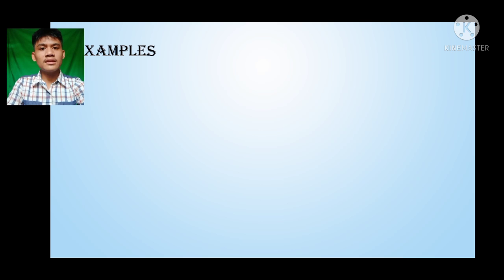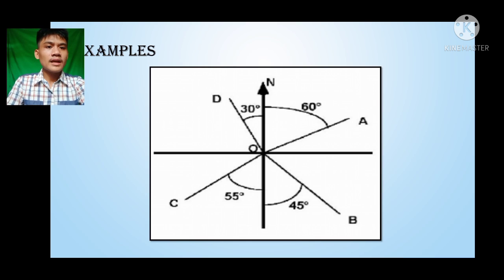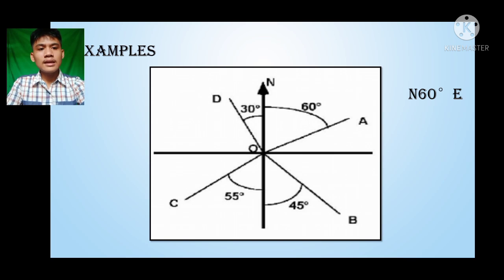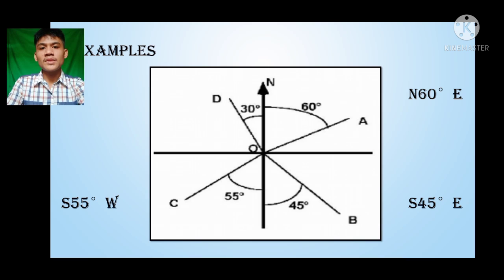How about these given examples? We have angles measuring 60 degrees, 45 degrees, 55 degrees, and 30 degrees, with angles A, B, C, and D. For the first quadrant, we have 60 degrees north of east, written as N60°E. For the fourth quadrant, we have 45 degrees south of east, written as S45°E. In the third quadrant, we have 55 degrees south of west, written as S55°W. And for the second quadrant, we have 30 degrees north of west, written as N30°W.